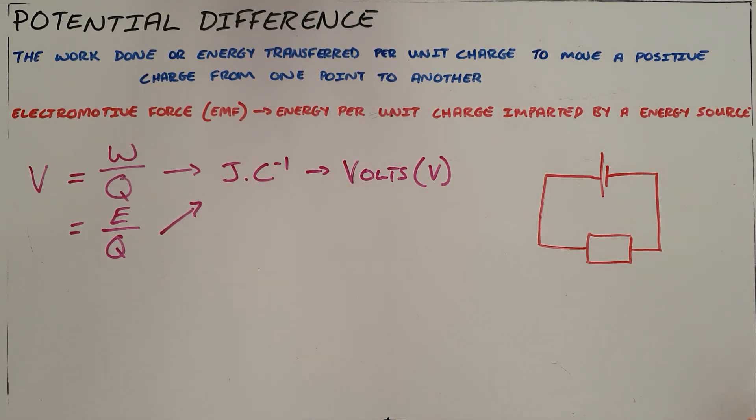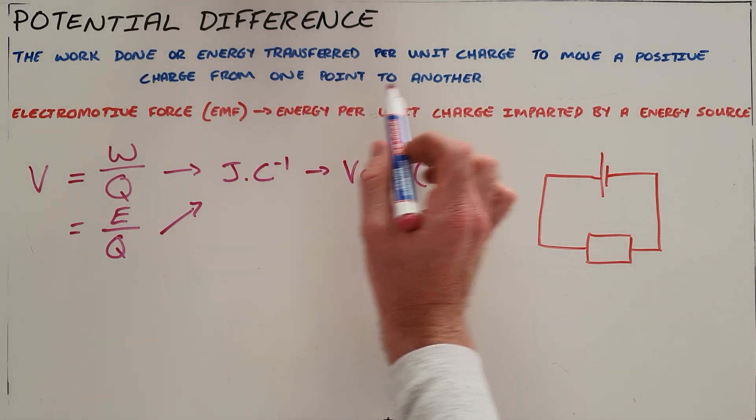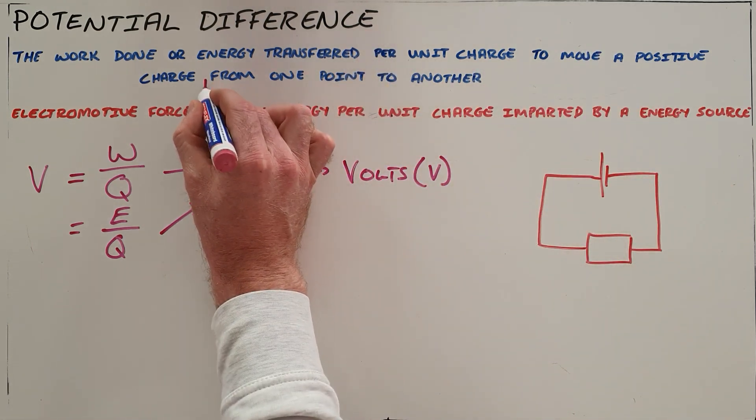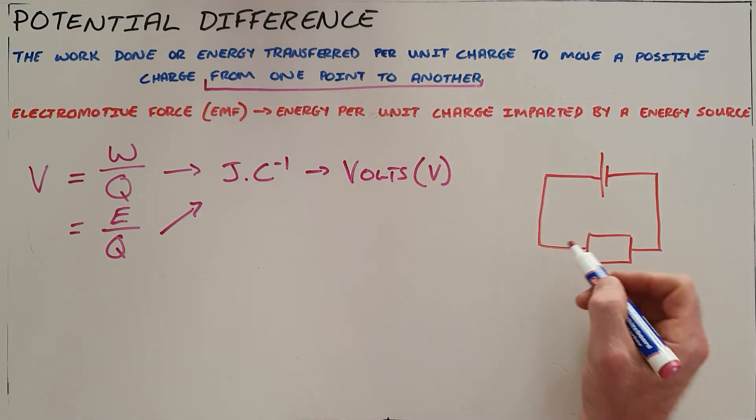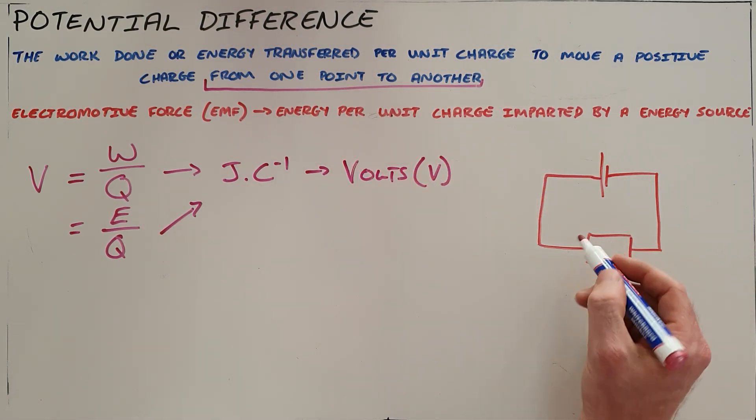The second part of this definition which is also important is per unit charge to move a charge from one point to another. Now this specifies that it's the work done per coulomb of charge between two points.